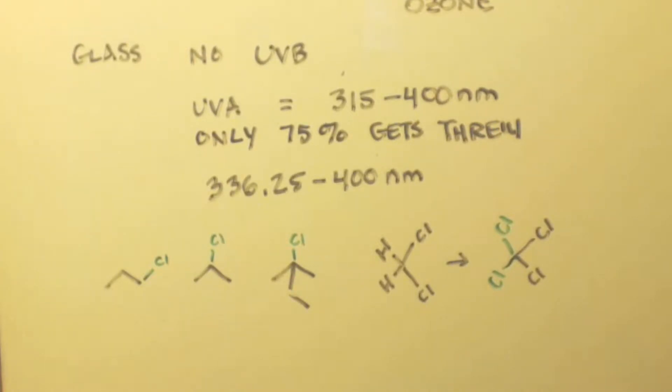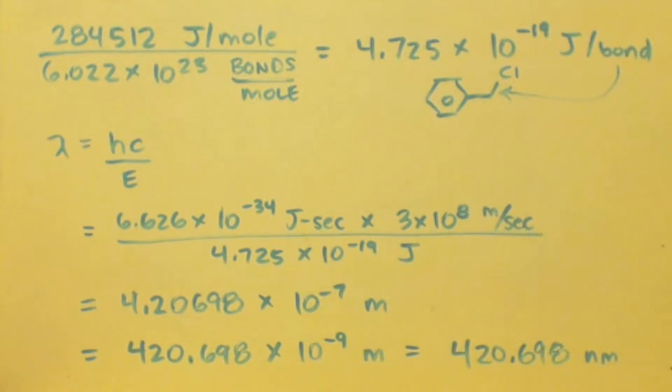Let's figure out how much energy is needed to break a benzoyl carbon-chlorine bond. That's the bond you're trying to make - you don't want to break it, you're making it. So let's see how much energy it takes to break it. I get this number here, 4.725 times 10 to the negative 19 joules per bond. That means if I have a photon that has this much energy or more, it will break that benzoyl carbon-chlorine bond.